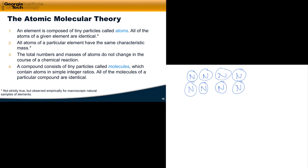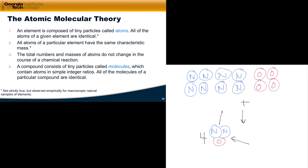Fourth, a compound consists of tiny particles called molecules, which contain atoms in simple integer ratios, and all molecules of a particular compound are identical. For example, if we take eight nitrogen atoms and four oxygen atoms and combine them in a two-to-one ratio of nitrogen to oxygen, we form four identical molecules. These molecules are the essence of compounds — they contain multiple atoms combined in small integer ratios, such as two to one.